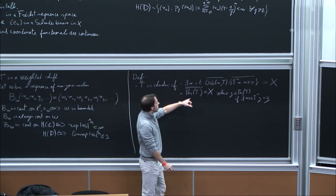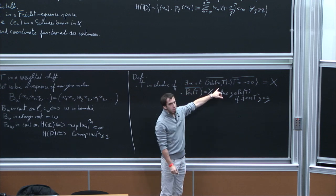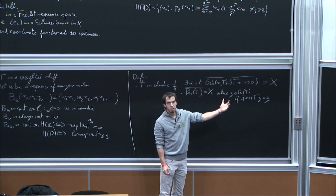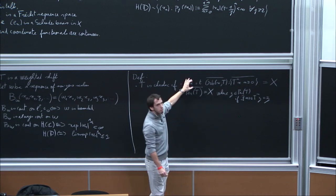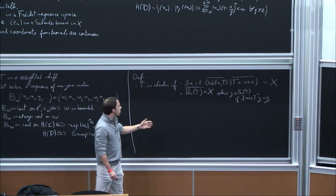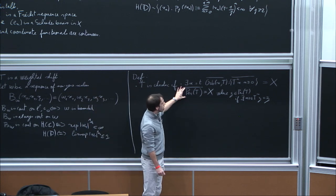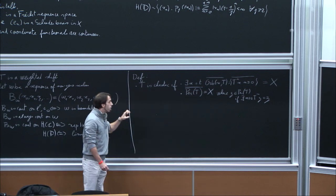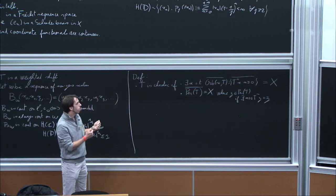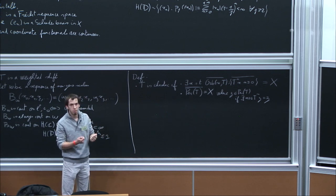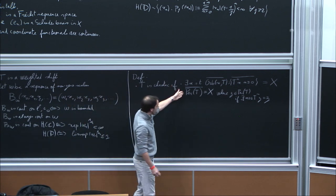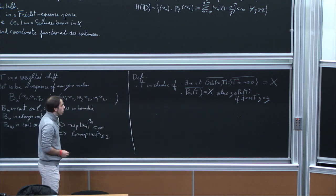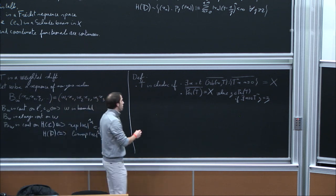The idea is that if you have a vector with a dense orbit, each element in the orbit also has a dense orbit, so you have a dense set of vectors with a dense orbit. On the other hand, you also have a dense set of periodic points. So in each non-empty open set, you can find vectors with completely different dynamical behavior — some with dense orbits and some whose orbits are finite and return to the starting point. That is the idea of chaos.